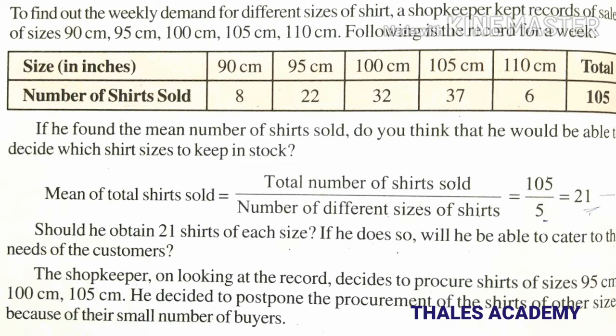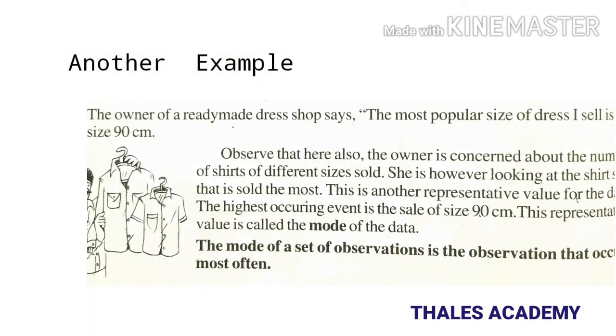If he does so, will he be able to cater to the needs of the customers? The shopkeeper, on looking at the record, decides to procure shirts of sizes 95 cm, 100 cm, and 105 cm. He decided to postpone procurement of other sizes because of their small number of buyers. The owner of a ready-made dress shop says the most popular size of dress she sells is size 90 cm. Here also the owner is concerned about the number of shirts of different sizes sold, specifically the shirt size that is sold the most.